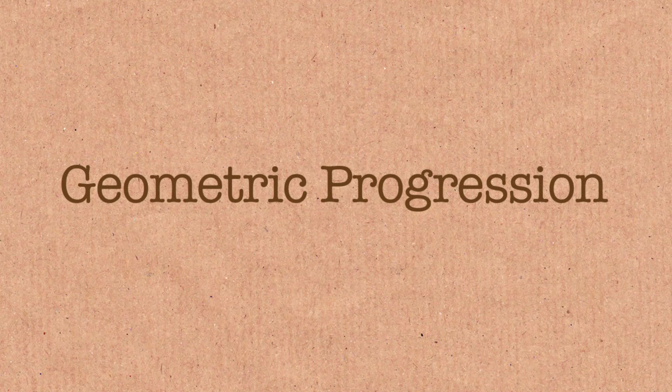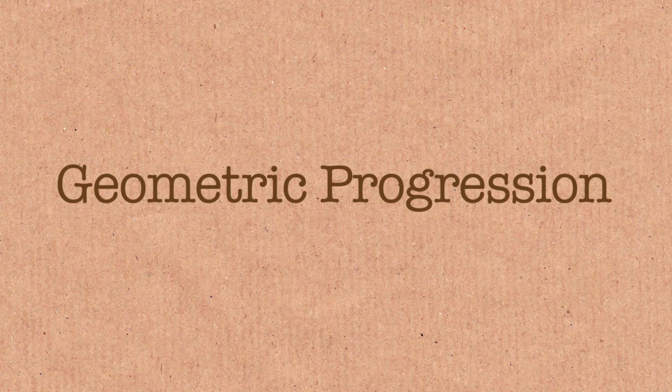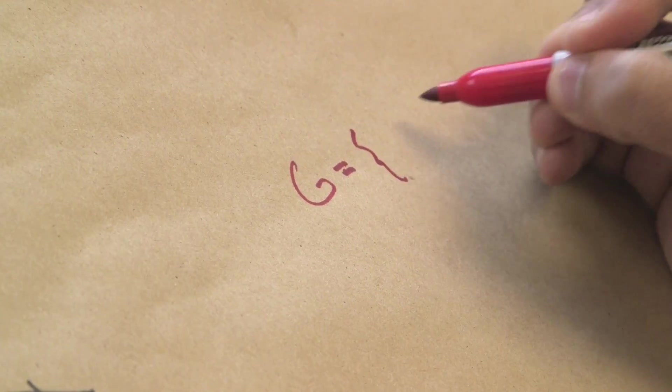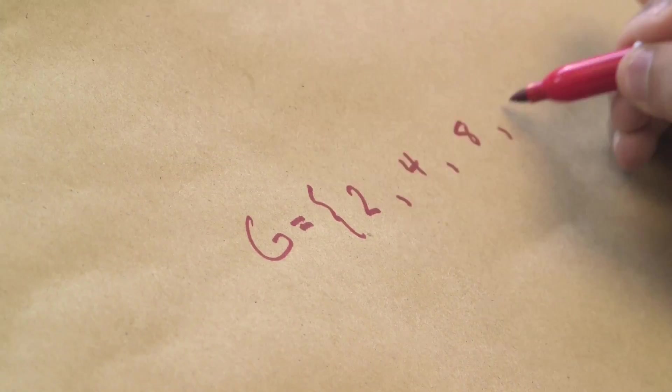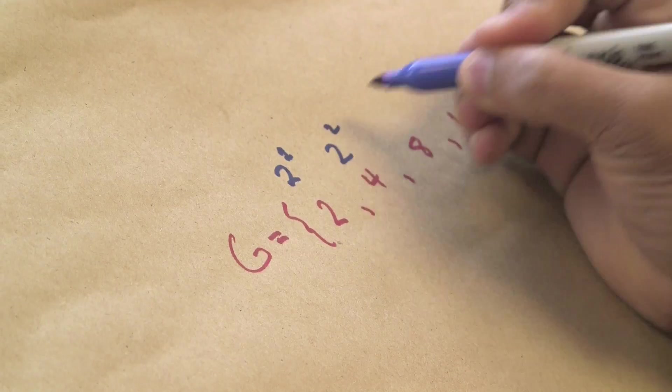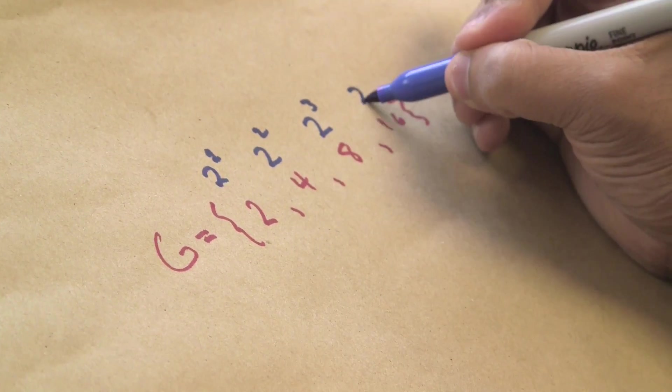So what we're going to do next are geometric sequences. I'll call it G this time. And this set will be 2, 4, 8, and 16. This is 2 to the 1, 2 squared, 2 cubed, and this is 2 to the 4.